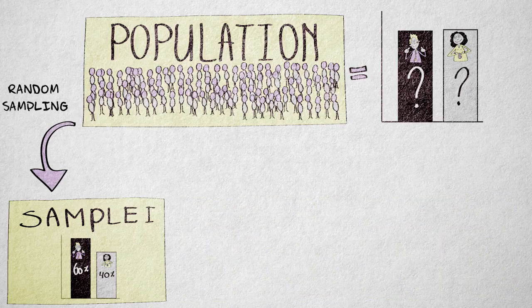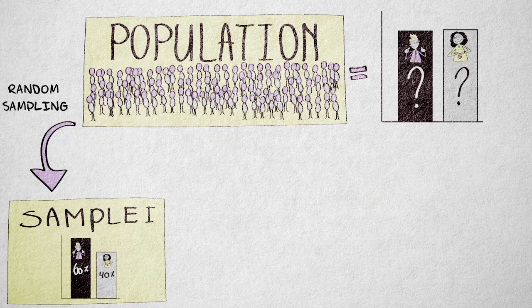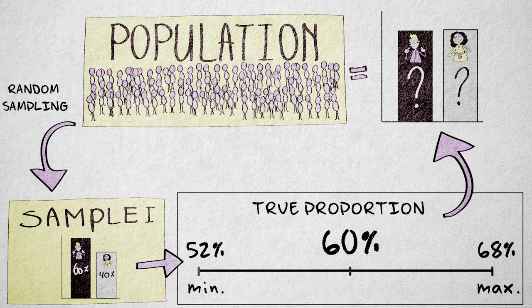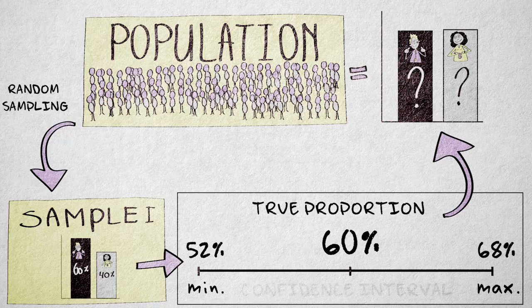So if we find that 60 percent of our sample indicates they will vote for A, then we can say we are fairly confident that the true proportion will lie somewhere between 52 and 68 percent. This interval is called a confidence interval.